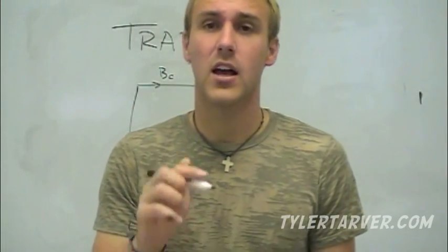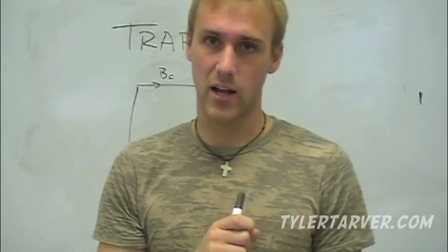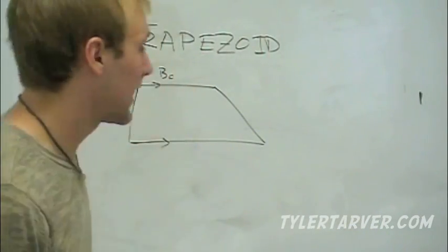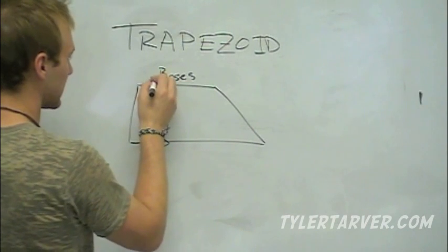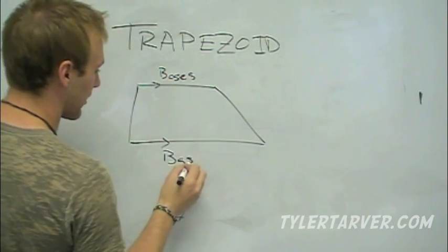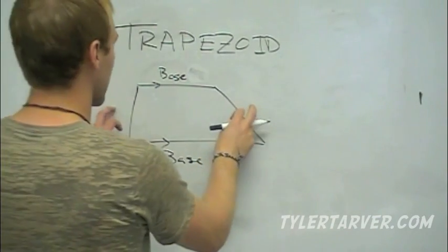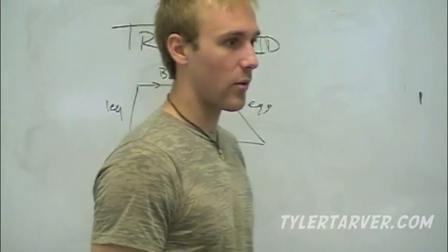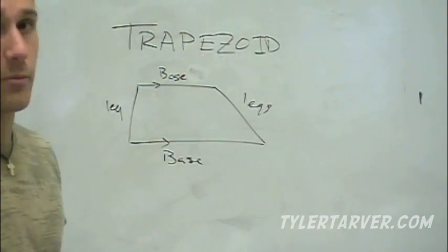In a trapezoid, it has one pair of parallel sides. A parallelogram has both pairs of opposite sides parallel; a trapezoid has just one pair. The sides that are parallel are called the bases. These two other sides are called the legs.